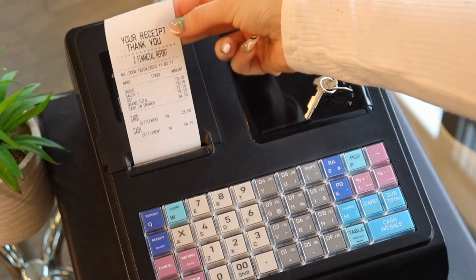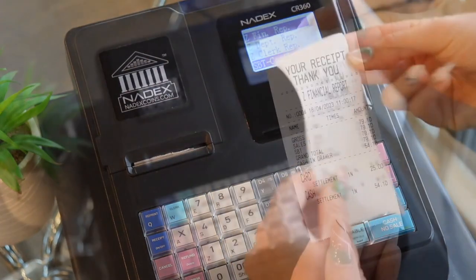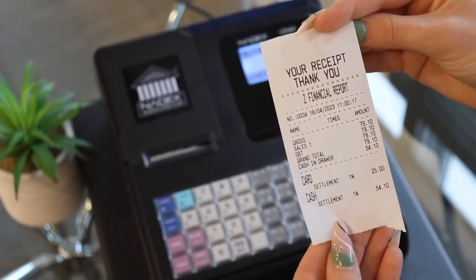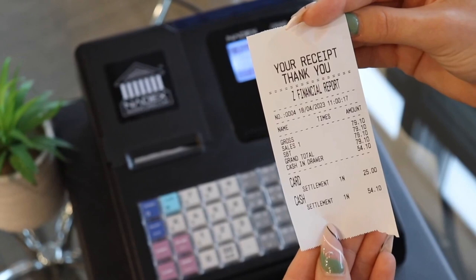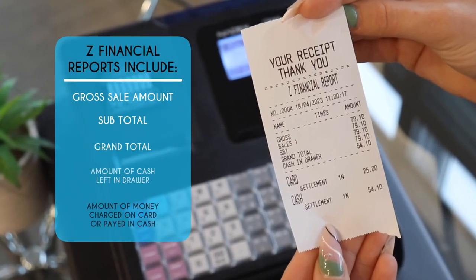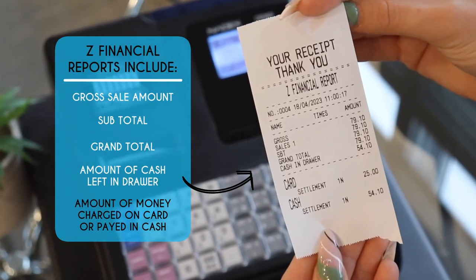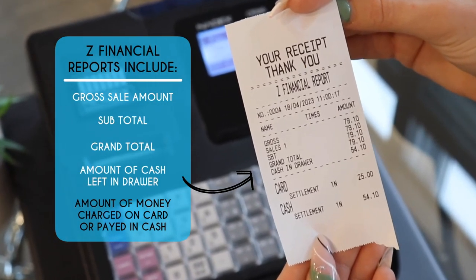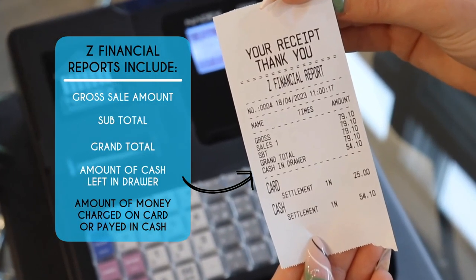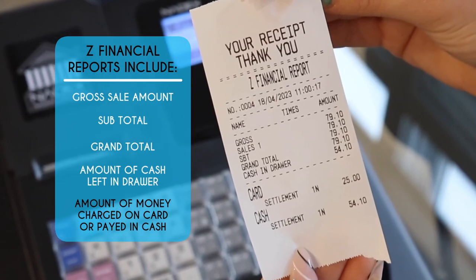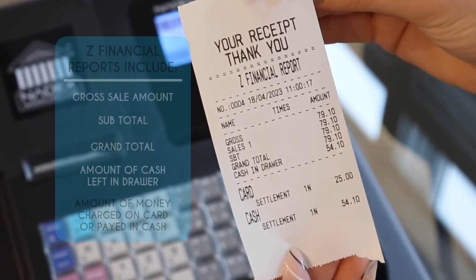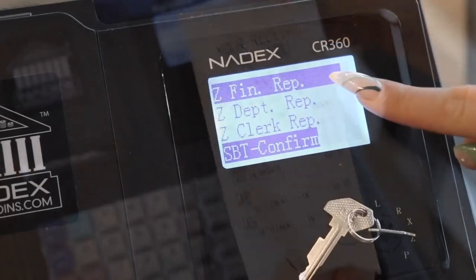Z-Reports are end-of-day reports that calculate and display the payments received through the register that day, making sure you were under in cash and so on. It also tells you how much sales were paid in card or paid in cash, as seen on the bottom of the receipt.